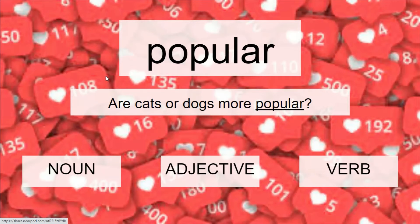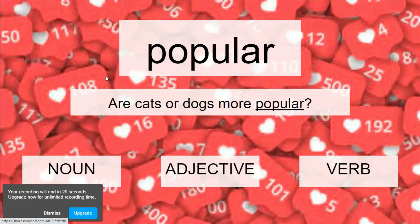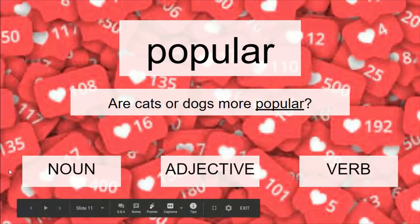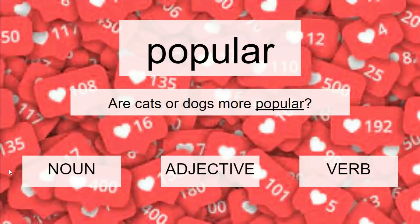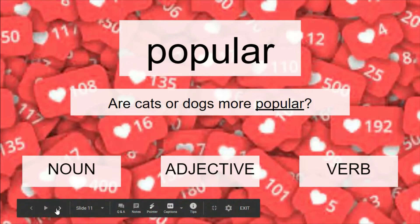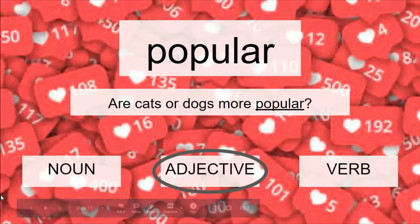Our next word is 'popular.' I'm going to read it first and then you can repeat after me: 'Are cats or dogs more popular?' Is 'popular' a noun, an adjective, or a verb? In this sentence, 'popular' is an adjective. You got it!